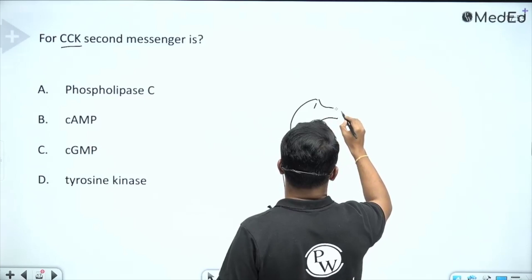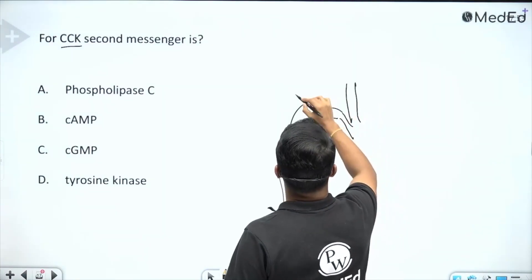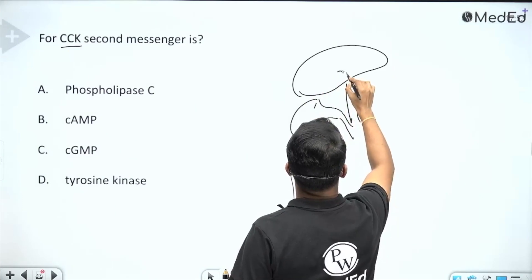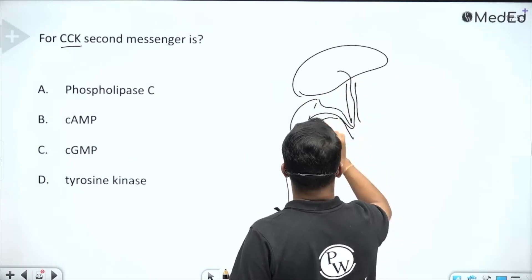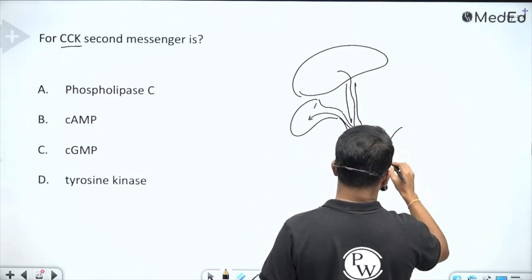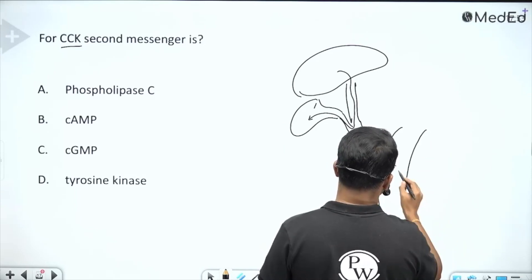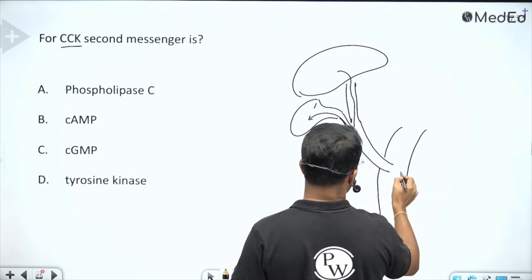We know that we have a gallbladder which acts as a storage unit for bile. The liver forms the bile. From the liver, it comes and gets stored in the gallbladder, and then we have a common bile duct which opens in an orifice in the duodenum. It gets combined with the pancreatic duct and opens in the duodenum.